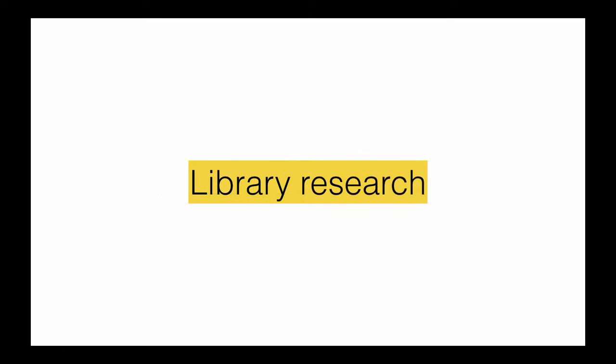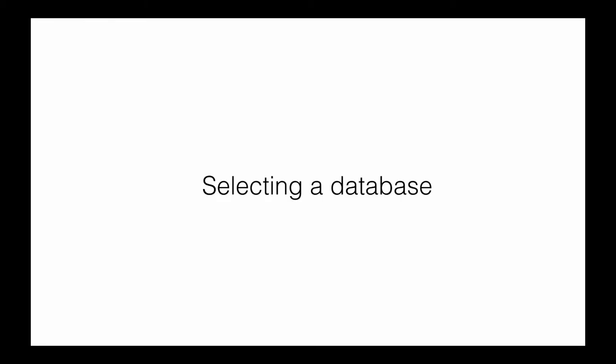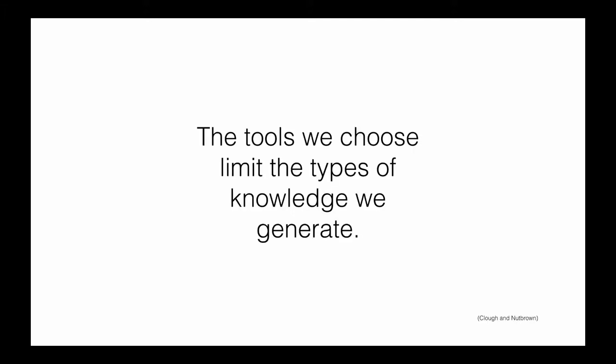For example, if your goal is to write a paper that reviews existing research in a particular field, the most appropriate method would be library research. This could involve defining keywords, selecting a database or using quick search, specifying source types, and assessing source quality, among others. In any case, we should realize that the tools we choose limit the types of knowledge we can generate.